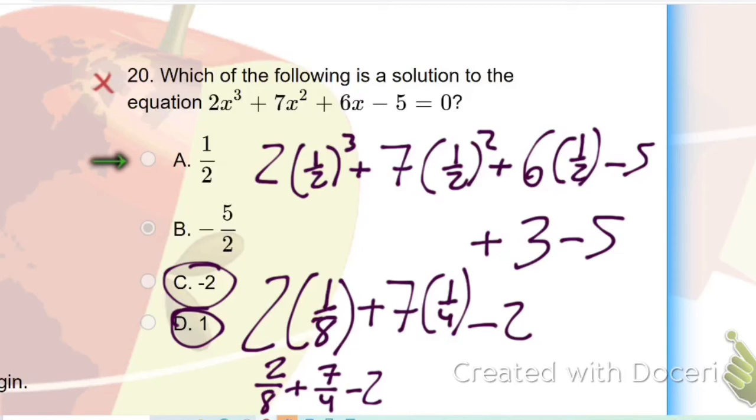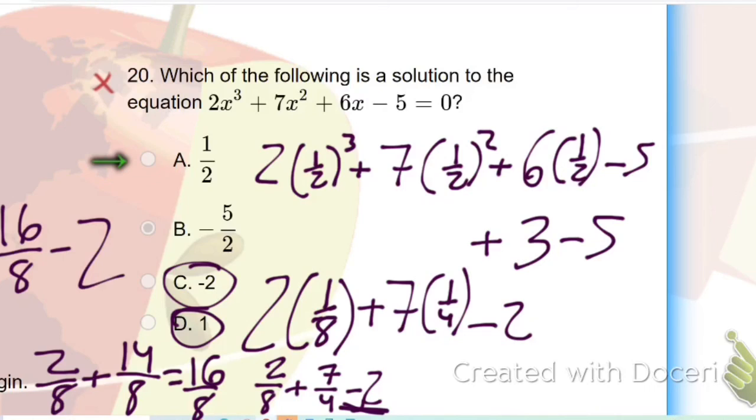Alright, so I'm going to get a common denominator with the 7/4. So this will change into 2/8 plus 14/8, which will eventually give me 16/8. And remember this is all minus 2. So this is 16/8 minus 2.